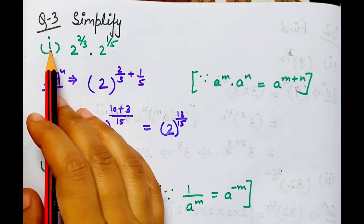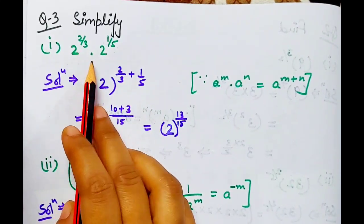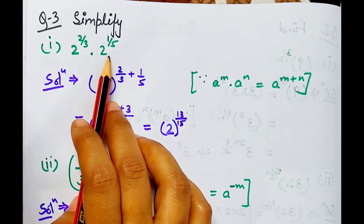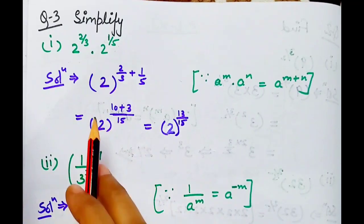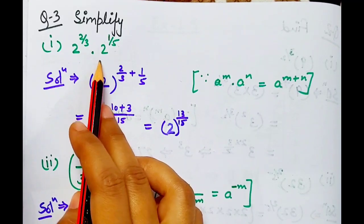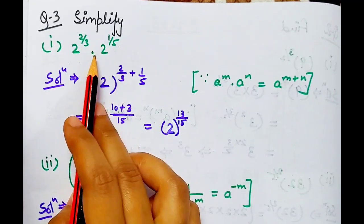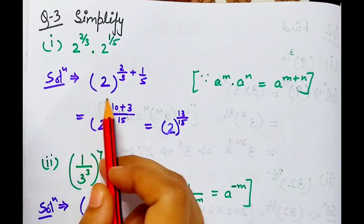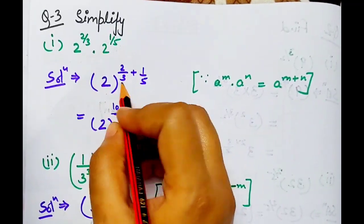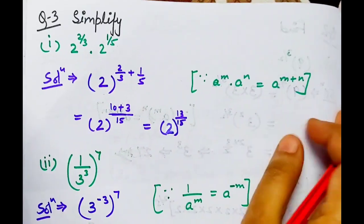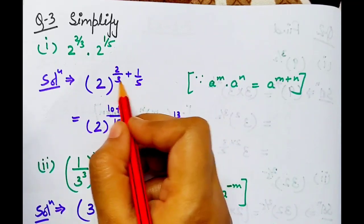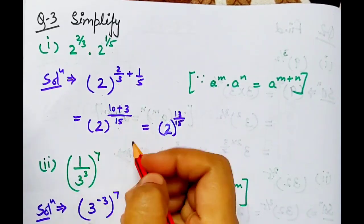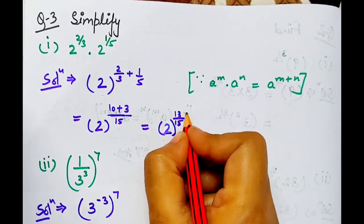Question number 3. Simplify. First part: 2 to the power 2 by 3, into 2 to the power 1 by 5. Yahan pe laws ka use karke, jo exponents ke laws hain, unka use karke hume answer find out karna hai. Base same ho rahi hai, powers different hain. Jab base same ho aur powers different, to base as it is copy hota hai aur powers add hoti hain. To: 2 to the power 2 by 3 plus 1 by 5. LCM 15 ho jayega, aur yahan aayega 10 plus 3. Answer humara 2 to the power 13 by 15.